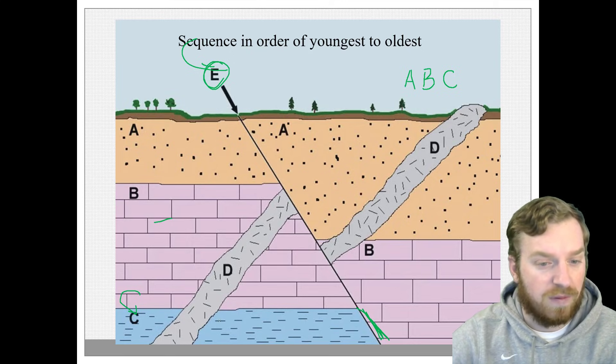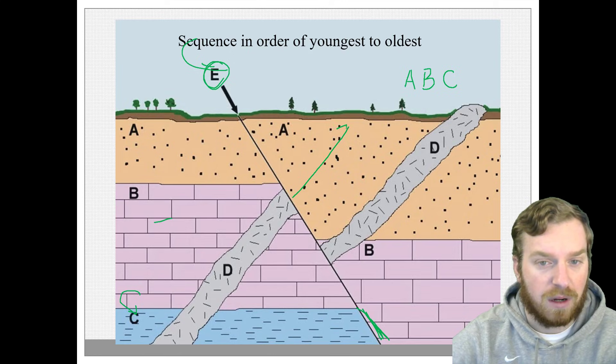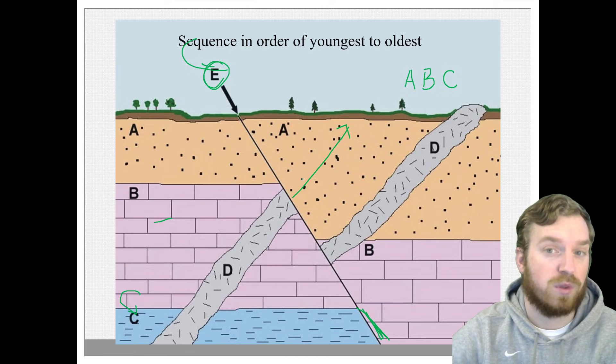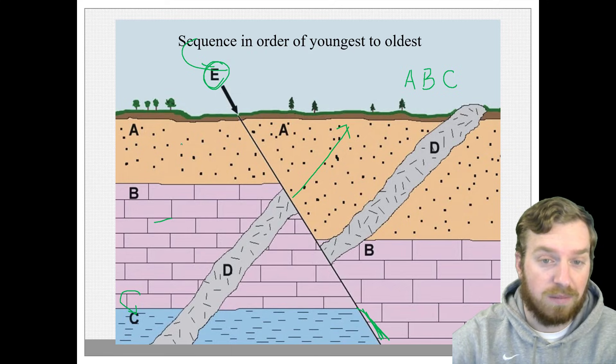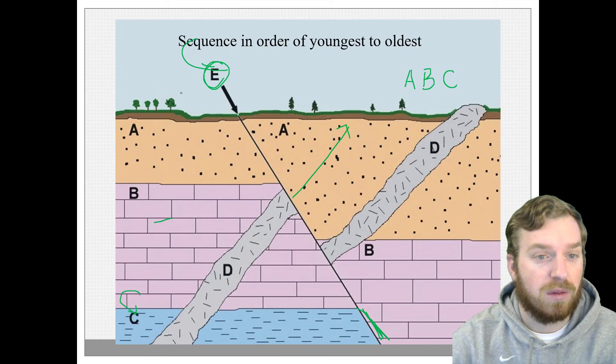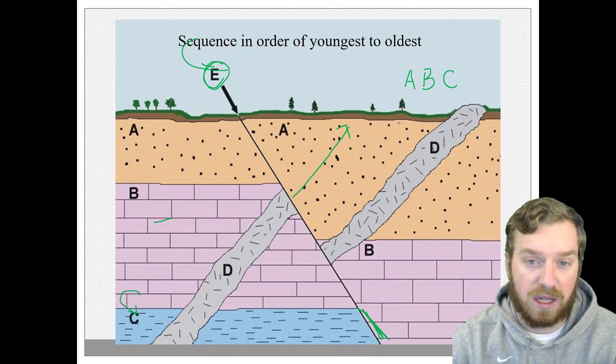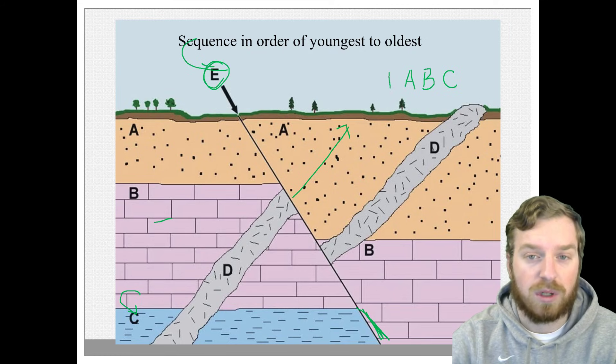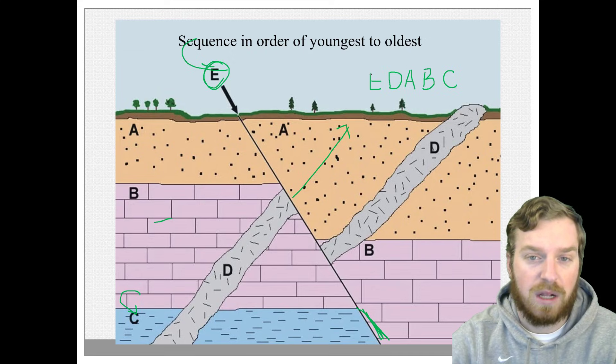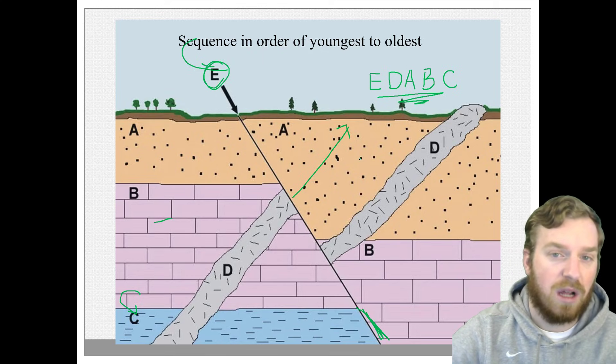Because if it wasn't, then the intrusion would just cut through and continue on its way this way after. And that's exactly what it did when it first was intruding onto these rocks, going up to the surface. But the fault line made it so that after it had cooled off, after it had solidified, then it cut it. And so we're going to say that D is older than E based off of that logic. And that's kind of what these are, just like a little logic puzzle.